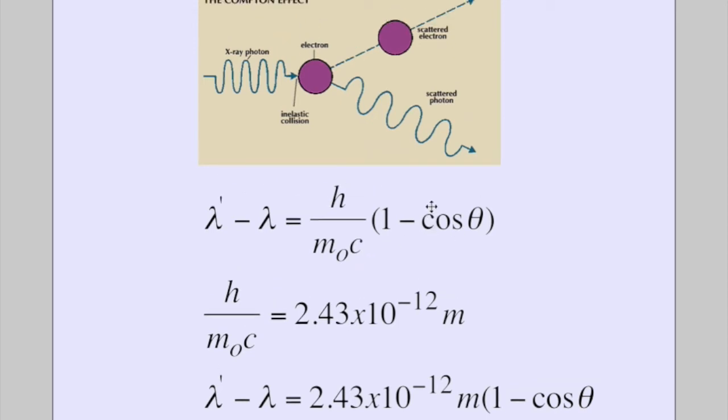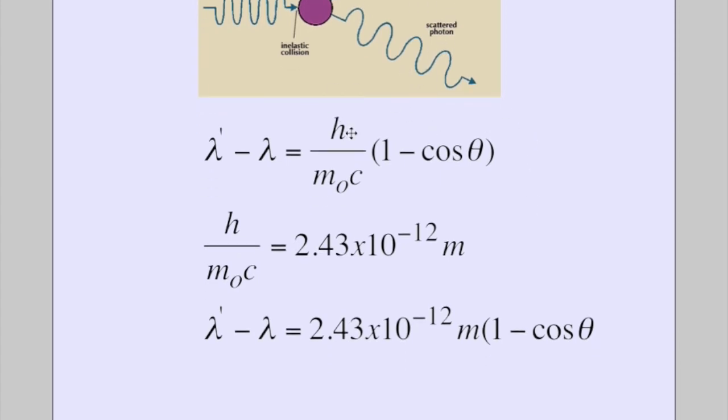times 1 minus cosine of theta. That's the deflection angle. So you have a constant divided by a constant times a constant. We can summarize all these into 2.43 × 10⁻¹² meters.